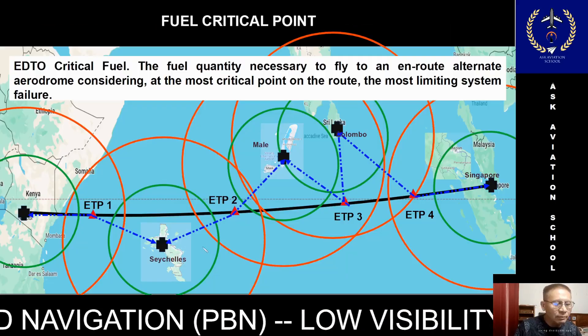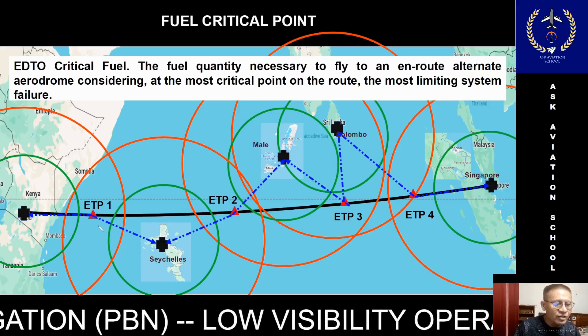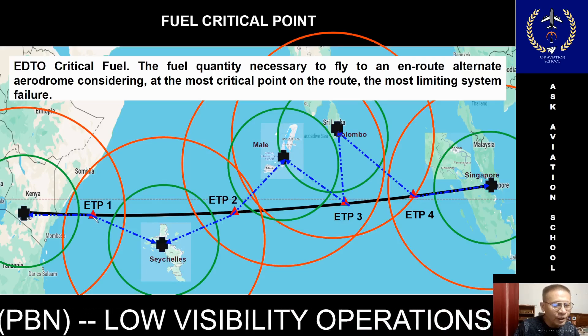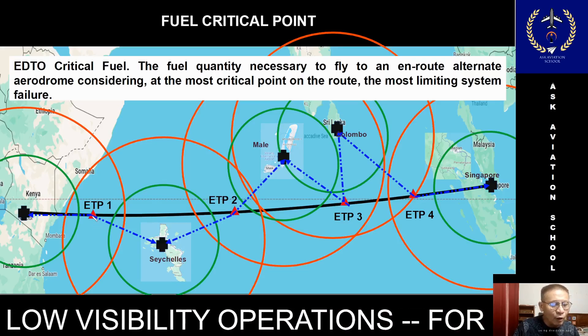The third one is the engine failure plus the pressurization failure, in which the aircraft is to descend to fly level 100 or MORA, whichever is higher, and fly with a speed of one engine inoperative which has been approved by the regulator.